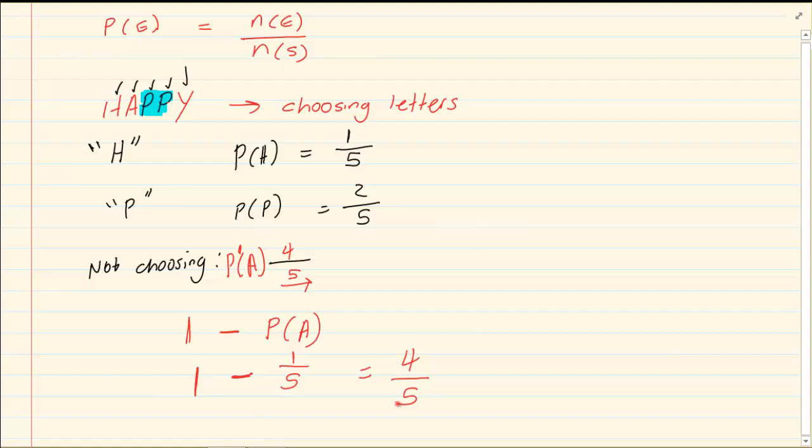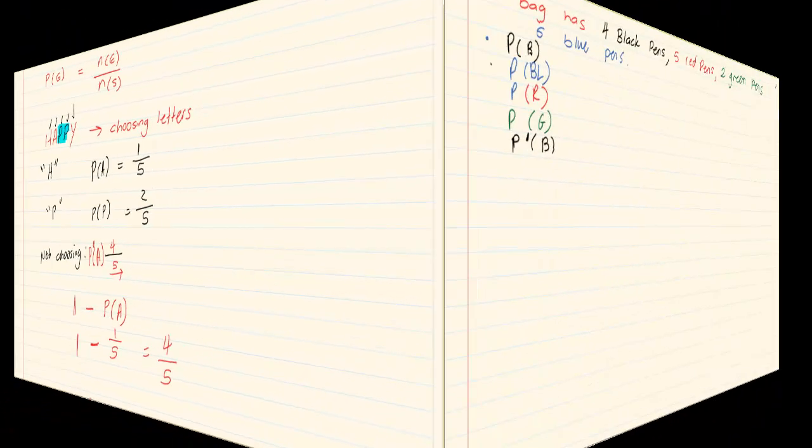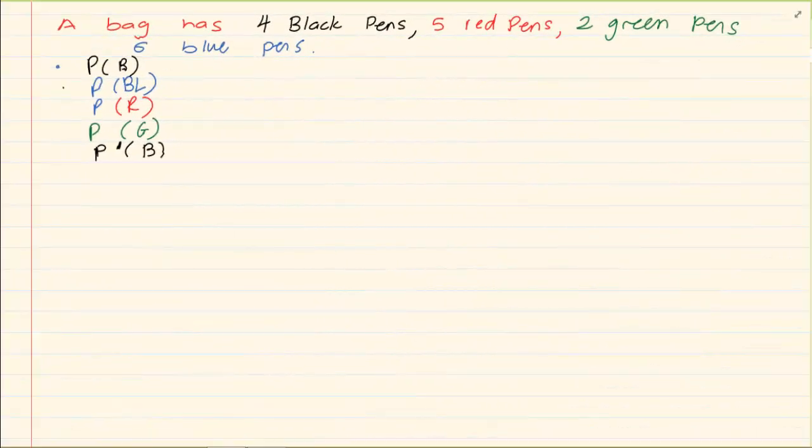Now these are when they are giving us easy probabilities to calculate. Now let us take the following example. It says a bag has four black pens, five red pens, two green pens and six blue pens.